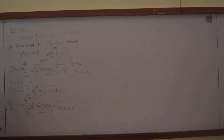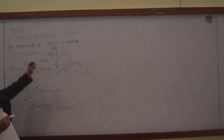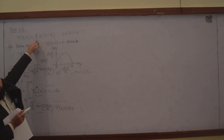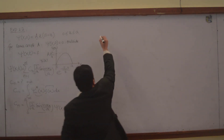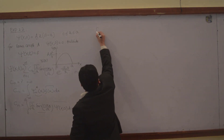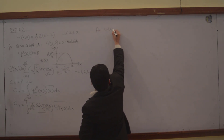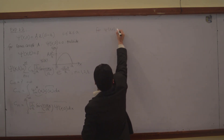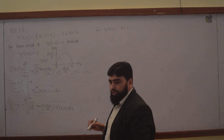Whenever in quantum mechanics you have a wave function, that wave function you cannot utilize unless and until you find the normalization constant. So for our wave function, for psi of x0, we will have to find the normalization constant A.